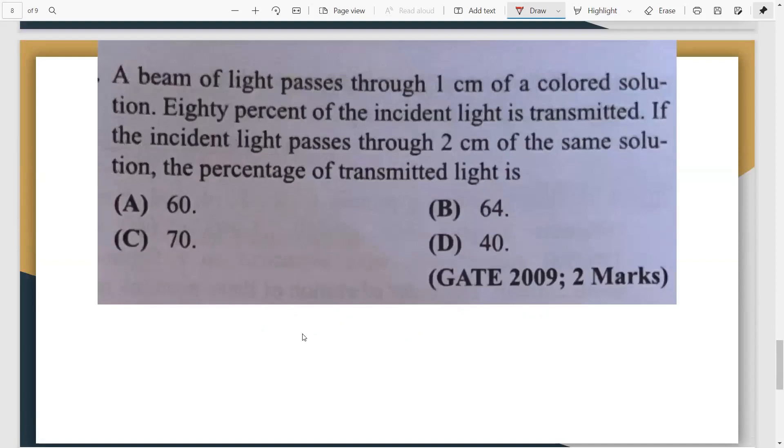Let's move on to the next question. This question is slightly different. It says a beam of light passes through one centimeter of a colored solution. So they have given you the path length L of a colored solution. 80% of incident light is transmitted. So first case they are saying the path length they have kept as one centimeter. At that particular point 80% of the incident light is transmitted. If the incident light passes through 2 centimeter, so now they are increasing the path length to 2 centimeter using the same solution. The percentage of transmittance or the percentage of transmitted light. So this is T1, this is T2. They are asking you how much will T2 be.